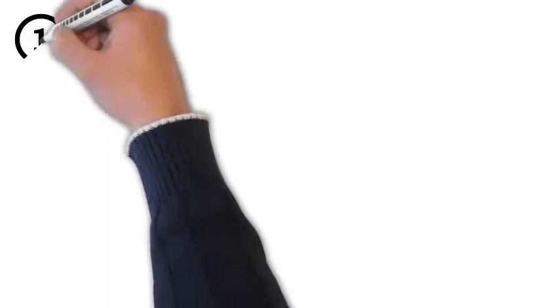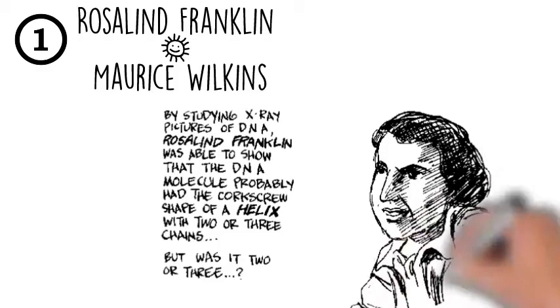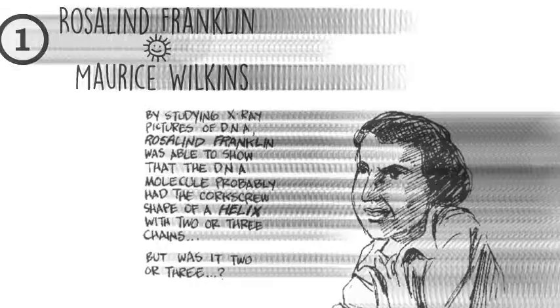First was Rosalind Franklin and Maurice Wilkins. They studied DNA using x-rays and were able to see that it was a corkscrew shape.